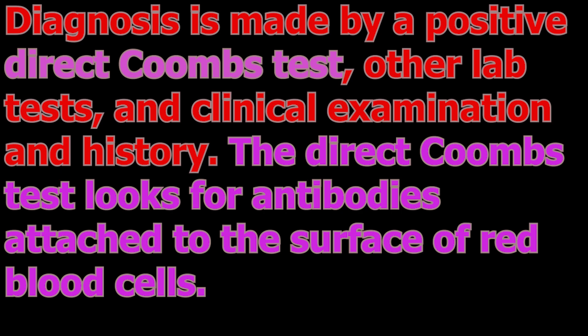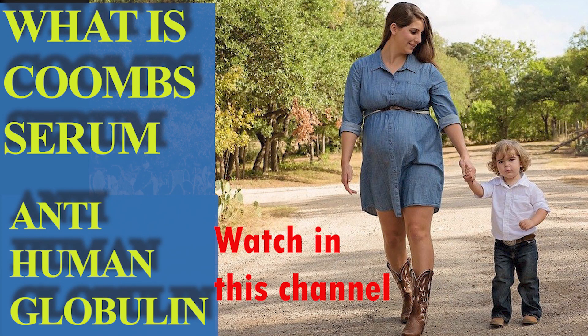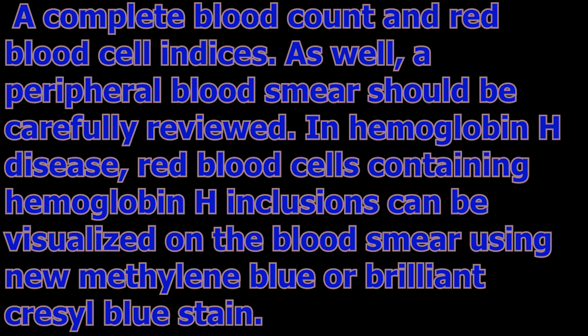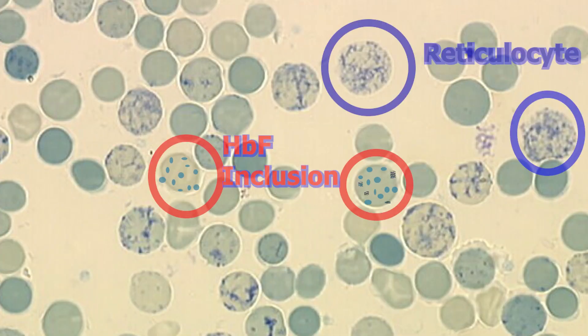Some medications can also cause warm antibody autoimmune hemolytic anemia. Alpha thalassemia: normal hemoglobin consists of two alpha chains and two beta chains. In alpha thalassemia there is a quantitative decrease in the amount of alpha chains, resulting in fewer normal hemoglobin molecules. Alpha thalassemias are most commonly inherited in a Mendelian recessive manner.